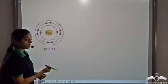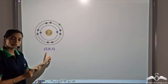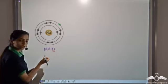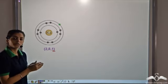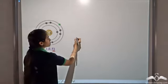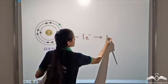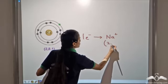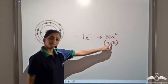When we have sodium, the electronic configuration of sodium is 2, 8, 1. So it has one extra electron. In order to have the electronic configuration of the nearest noble gas, it has to lose one electron. So it loses one electron to become Na⁺, which has the electronic configuration 2, 8. So now this is stable.